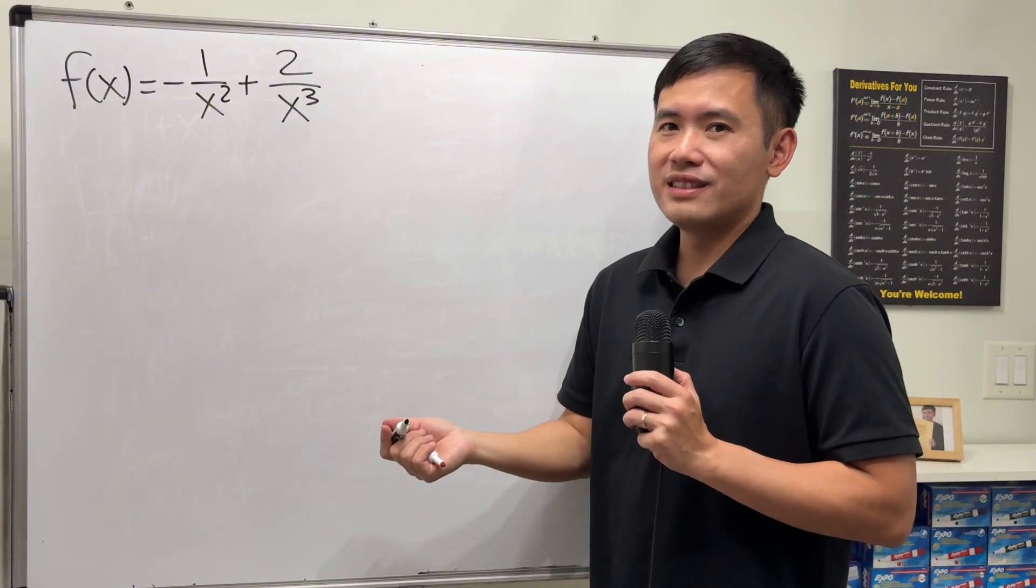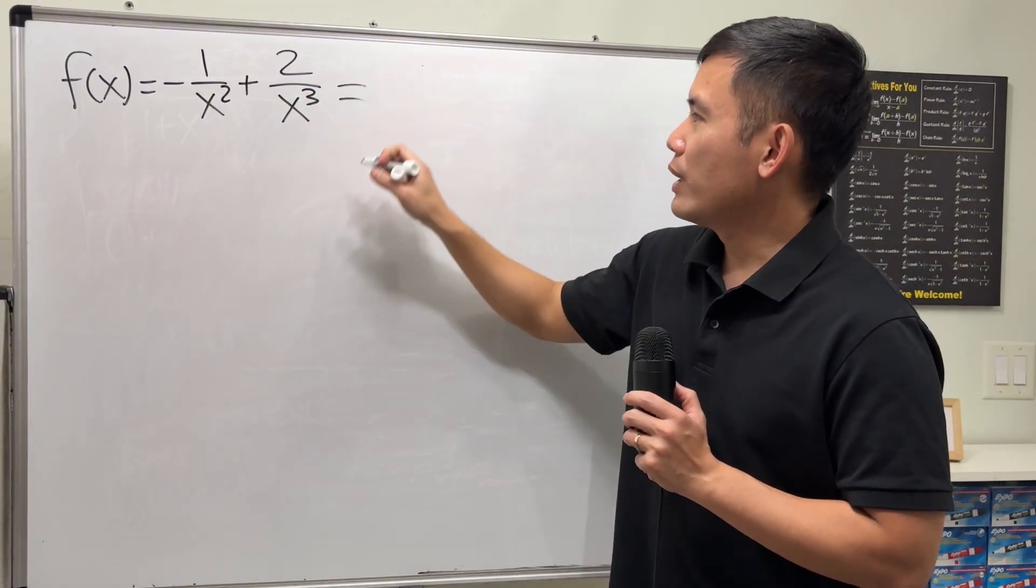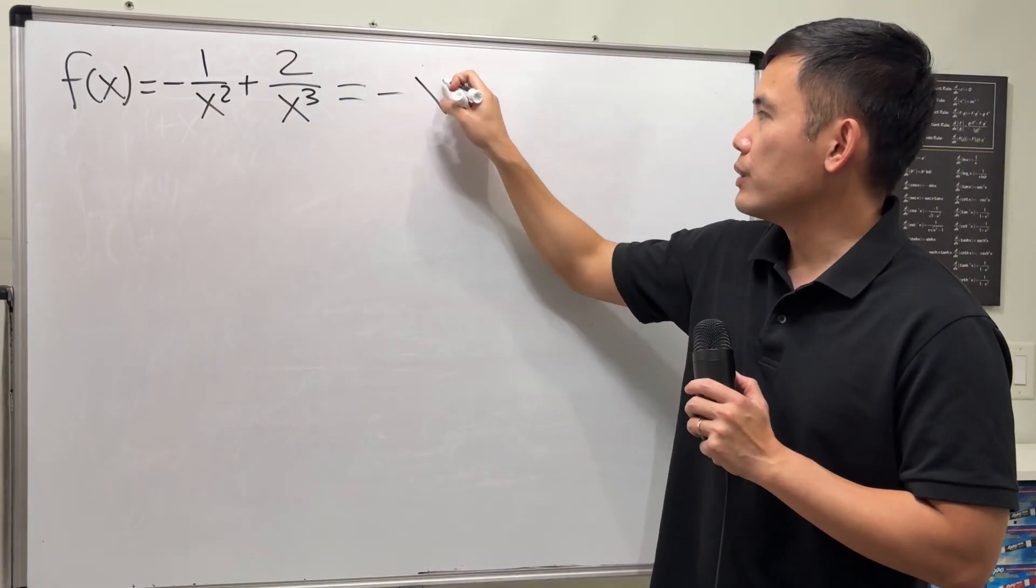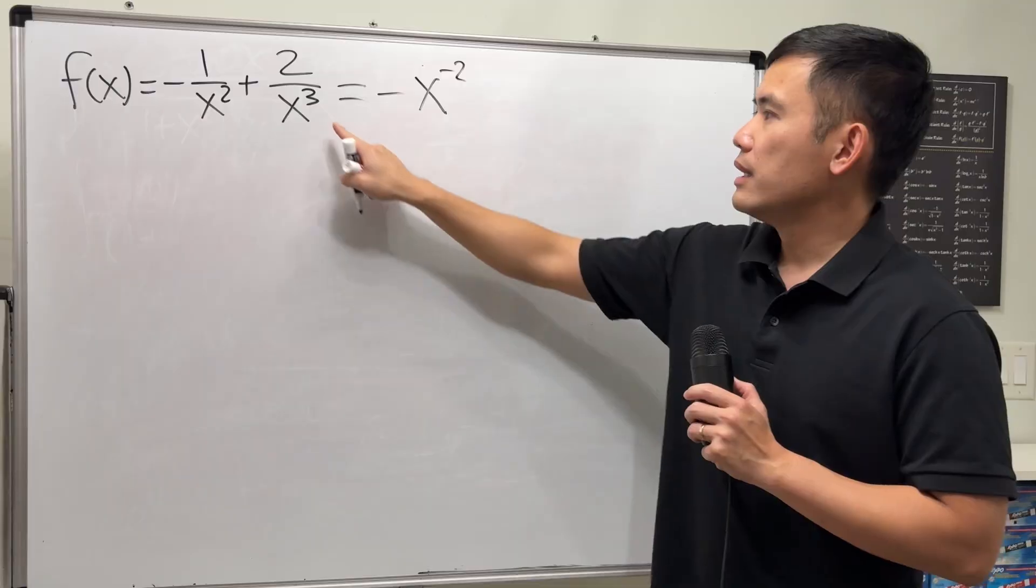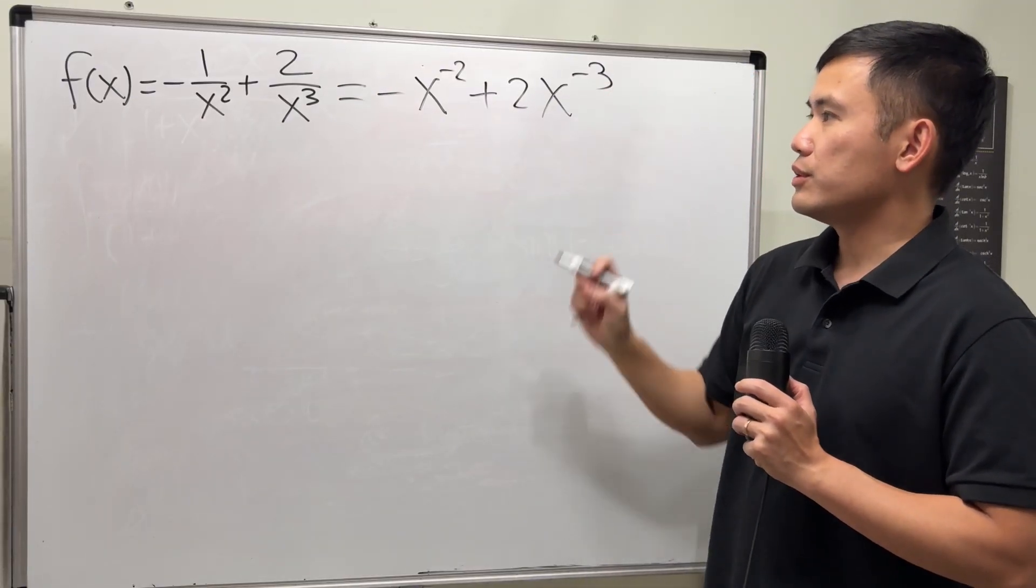But how do we take the derivative of this? We have to use the power rule. We have to rewrite it. Rewrite this as what? Negative, bring this up and make that into negative 2 exponent, and do the same thing here. So plus 2x to the negative 3.